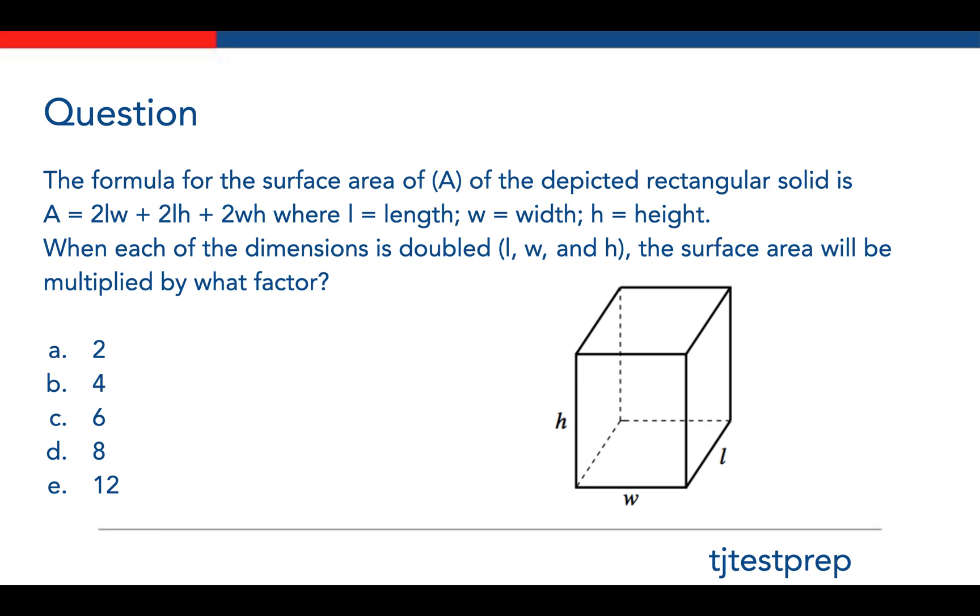The question is: the formula for the surface area of the depicted rectangular solid is A equals 2LW plus 2LH plus 2WH, where L equals length, W equals width, H equals height. When each of the dimensions is doubled, L, W, and H, the surface area will be multiplied by what factor? I want you to solve this problem first, then we will review the answer and the solution.